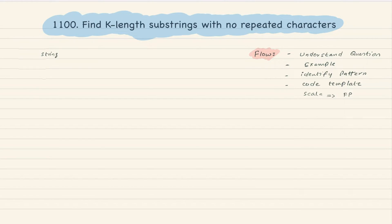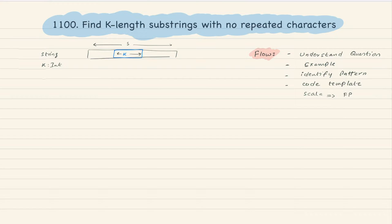In this question, they will give us a string and a value k which is an int. They're asking us to find all substrings of size k with non-repeating characters from the string. The condition is non-repeating characters. k could be a size greater than the string length, or k can be less than or equal to the string length.